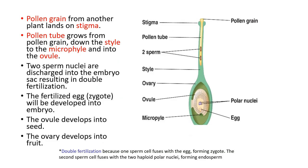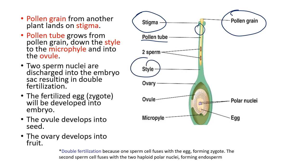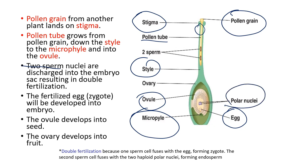In this diagram, a pollen grain from another plant lands on the stigma. The pollen tube grows from the pollen grain down the style and into the ovule. There are two sperm cells: one fertilizes the egg cell to form a zygote, which develops into an embryo. The other sperm fuses with polar nuclei in the middle, forming the endosperm. The ovule develops into a seed and the ovary develops into fruit.